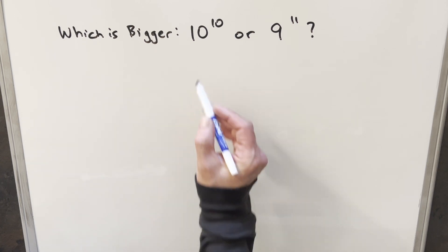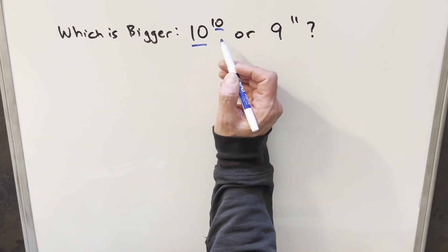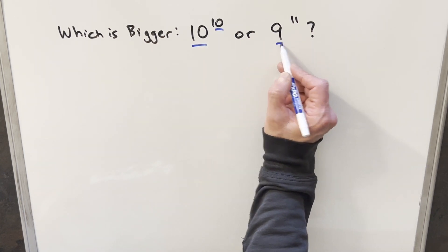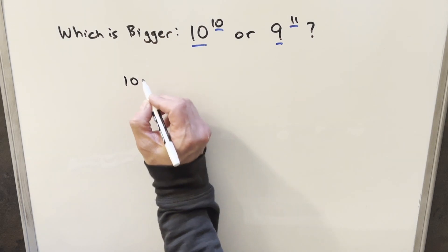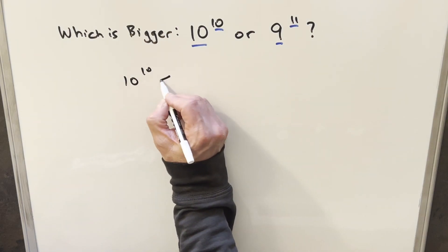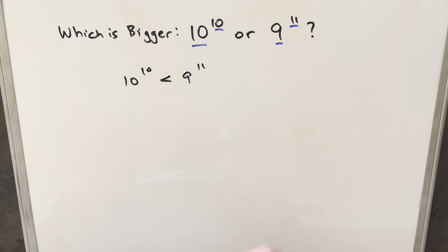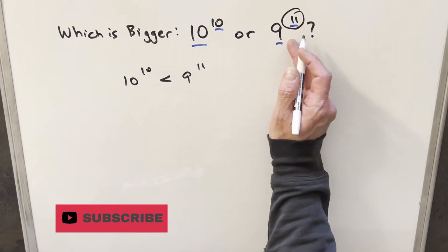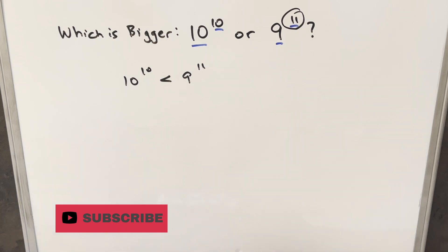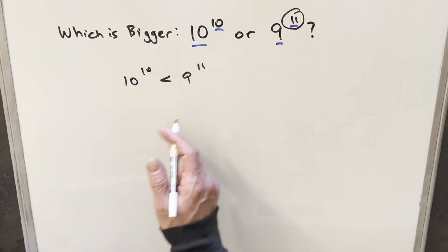I'm not sure if I've done one like this before where the base and exponent are the same, and then here they're only off by one. The way I like to start these is to take a guess, and my guess is that 10^10 is going to be less than 9^11. The reason is that oftentimes with these problems, it's the one with the bigger exponent that wins.